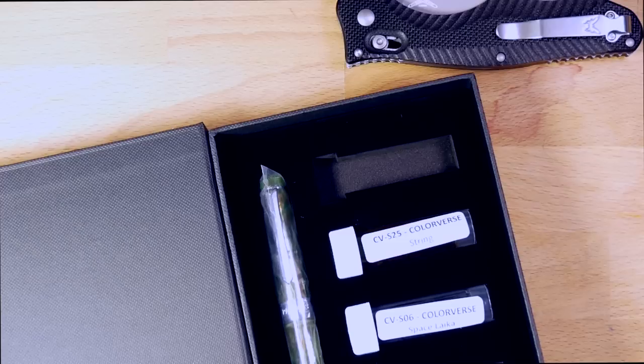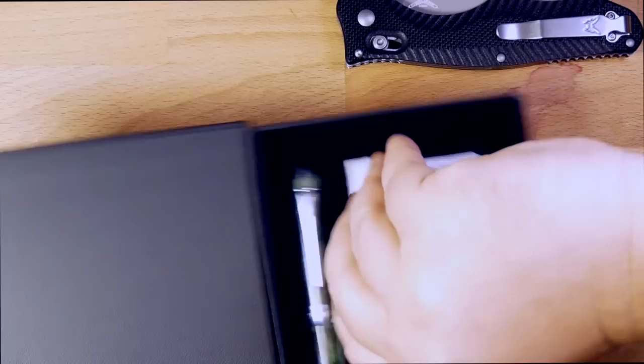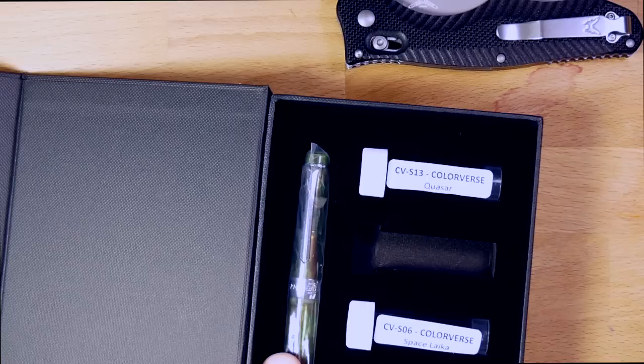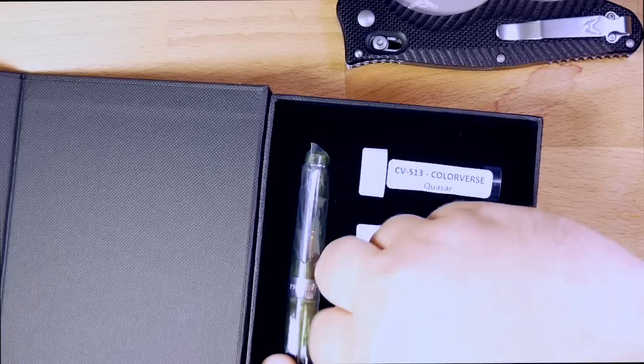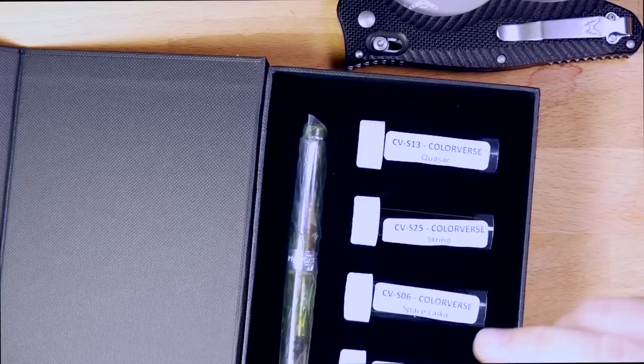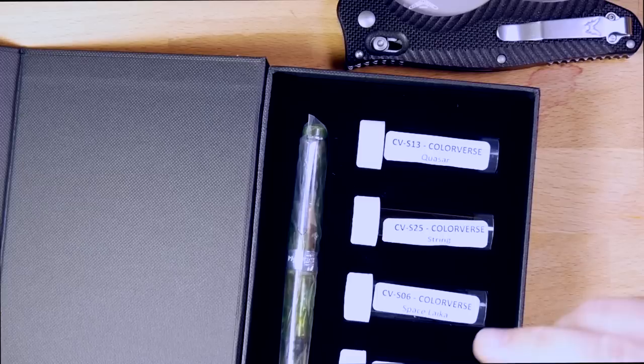So, we have up here Colorverse Quasar. Let me get these out of here. It looks like none of these leaked, which is very nice. These are nice, big ink samples. Quasar is a blue. I don't have that one yet. Colorverse String. Come out. There we go. Which looks like it's kind of an orange-ish, maybe? It looks cool. Space Laika, which is a brown, I believe. I don't have that one either. I actually don't have any of these. I might have Schrodinger. No, I don't have Schrodinger. So, that's cool. It's like a nice teal, it looks like. Oh, it's Gravity Wave. Schrodinger is a nice dark green.